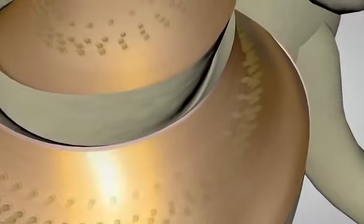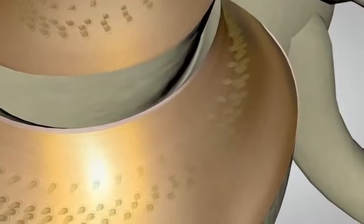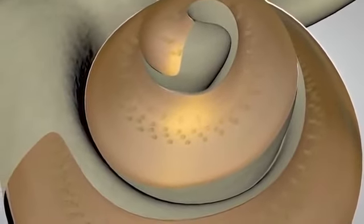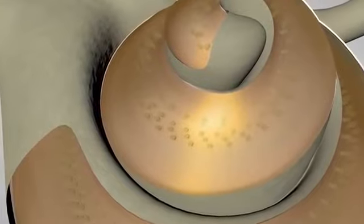The hair cells toward the top of the spiral detect progressively lower-pitched sounds, such as a trumpet or trombone. At the very top or apex of the spiral, the hair cells detect the lowest-pitched sounds, such as a tuba.